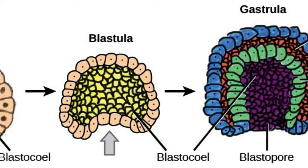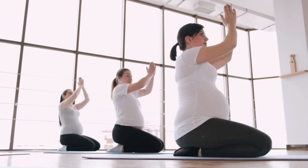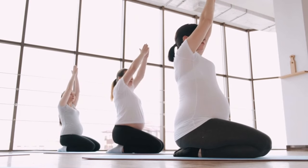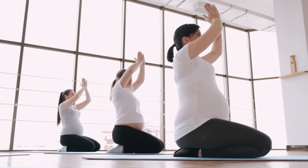Part of this blastocyst will form the placenta and membrane which will cover the baby, and the amniotic fluid which the baby will be swimming, moving, and kicking in while growing in the womb. The baby is very small to be seen, and the pregnancy test is negative.